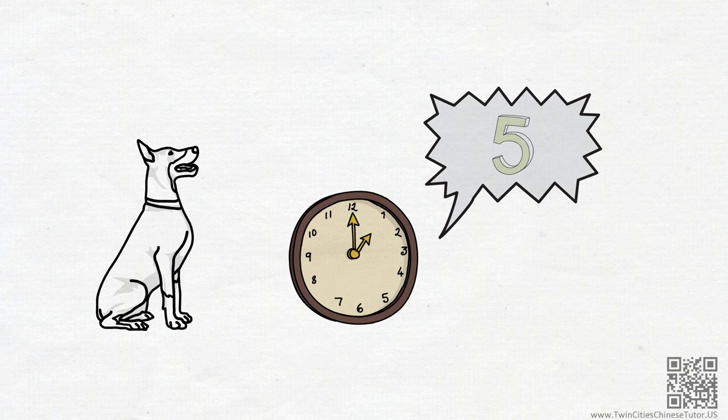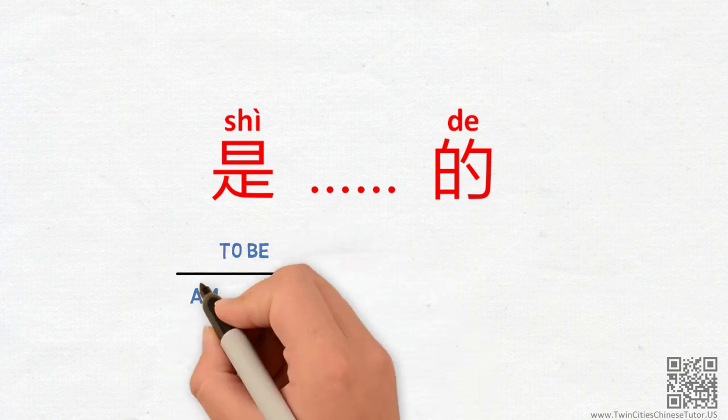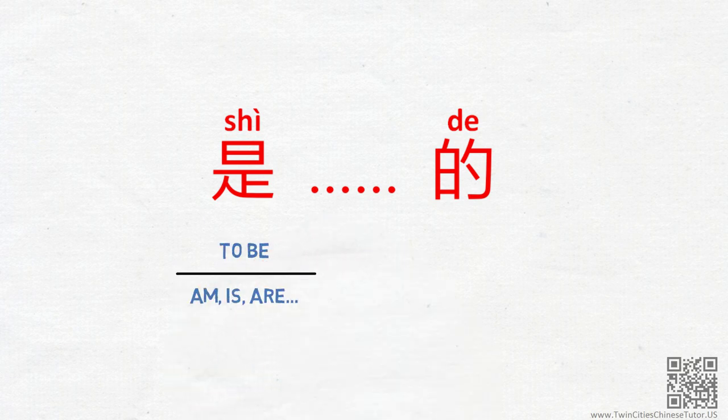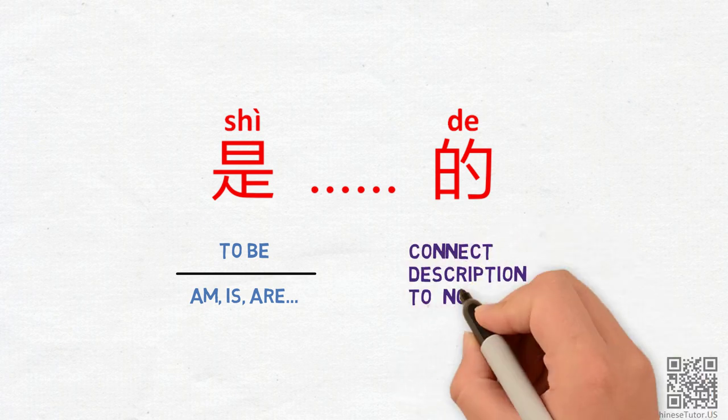To start, let's take a closer look at the two characters here. The character 是 can be used as a verb, translated as 'to be' in all of its variations. And the character 的 is used to connect a description to a noun.